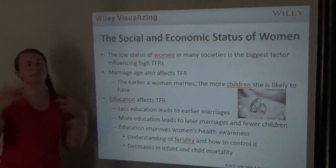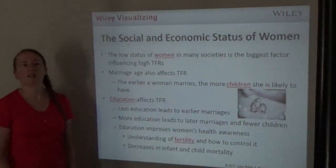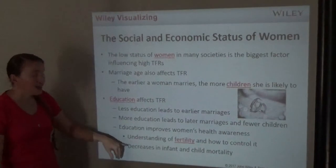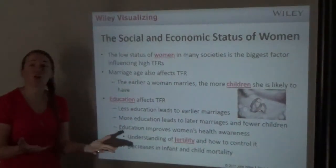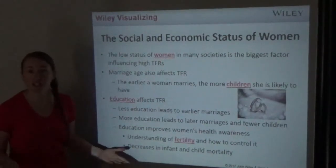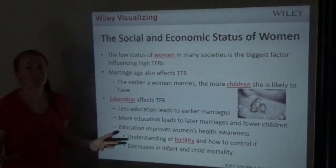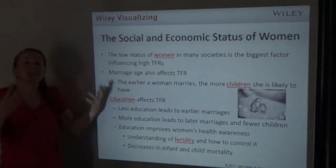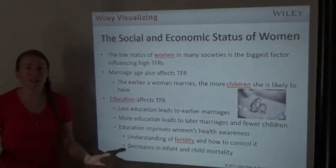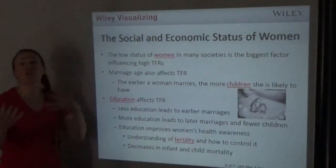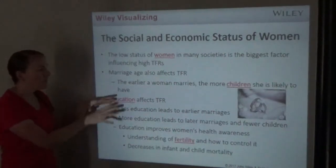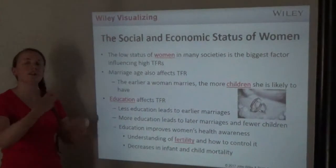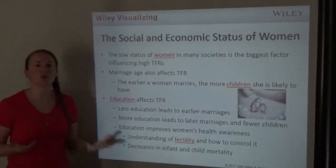We're not talking about a doctorate-level education here — just basic education like how to take care of a baby so it's less likely to die from infant mortality, how to recognize signs of dehydration (babies get dehydrated very quickly when they have diarrhea), understanding fertility and birth control options. Just basic education can help women in less developed countries achieve more equality and decrease total fertility rates.